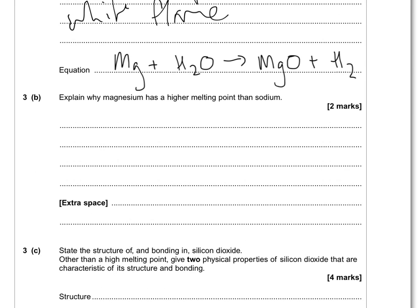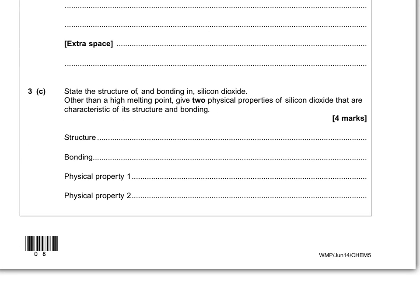Explain why magnesium has a higher melting point than sodium. This goes back to Chem 1. Magnesium has a higher ionic charge — 2+ rather than 1+ — it has more delocalised electrons, and therefore there's a greater attraction between the delocalised electrons and the ions. State the structure and bonding in silicon dioxide. The structure is giant covalent, or macromolecular — the same structure as diamond — and the bonding is covalent.